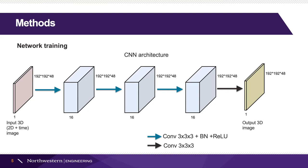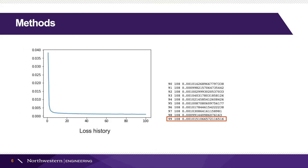This is followed by three identical convolutional layers, each with a kernel size of 3×3, batch normalization, and a ReLU activation function. The last output layer is also a convolutional layer with a kernel size of 3×3. After 100 iterations, we achieved a very small loss of around 0.001.